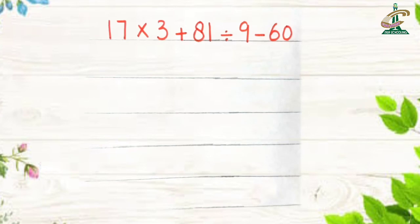We will solve one more question. This is the second question. 17 multiplied by 3 plus 81 divided by 9 minus 60. Write question again.